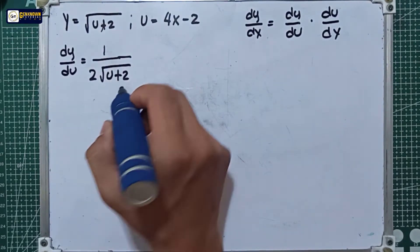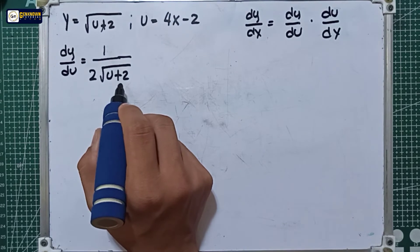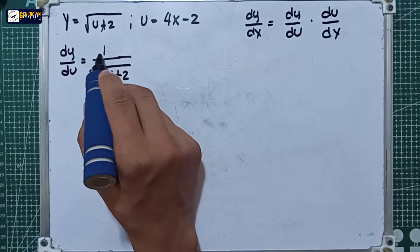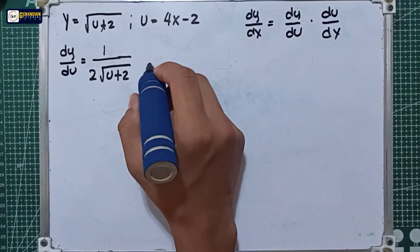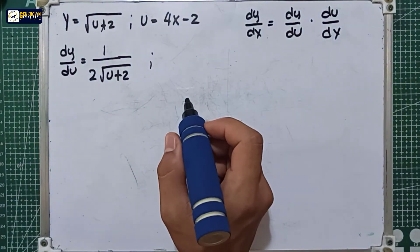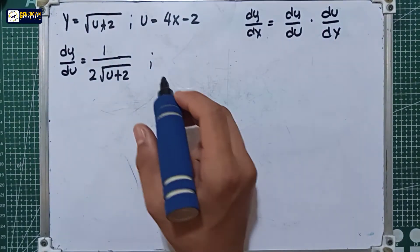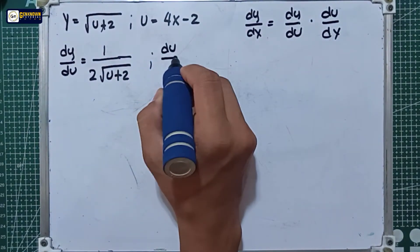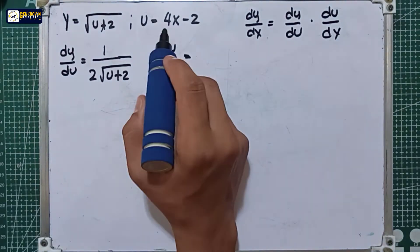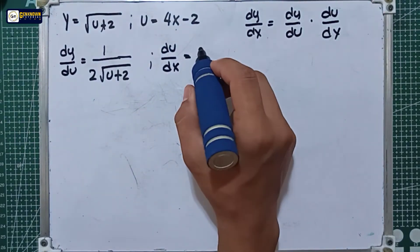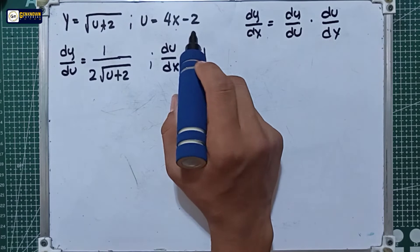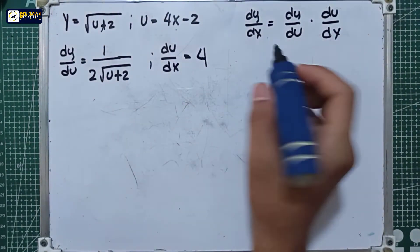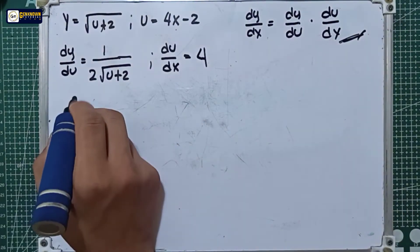The derivative of u is equal to 1, and the derivative of 2 is equal to 0 since 2 is a constant, so that simplifies cleanly. Next, we derive the u equation with respect to x: du over dx is equal to the derivative of 4x, which is 4, and the derivative of negative 2 is 0.